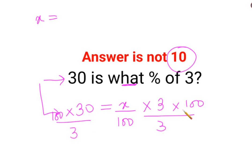So what happens is this and this gets cancelled this and this gets cancelled. So we are getting x multiplied by 1 and here we have 100 multiplied by 30 upon 3.